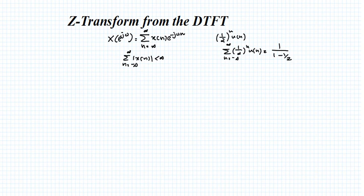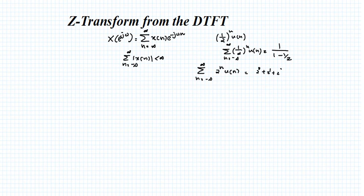The situation is different if you take the signal 2^n times u(n). If you evaluate the sum from n equals minus infinity to infinity, substituting n equals 0, 1, 2, etc., you get 2^0, 2^1, 2^2, and so on, which finally gives infinity. So this is not converging — we cannot find the DTFT of this signal.